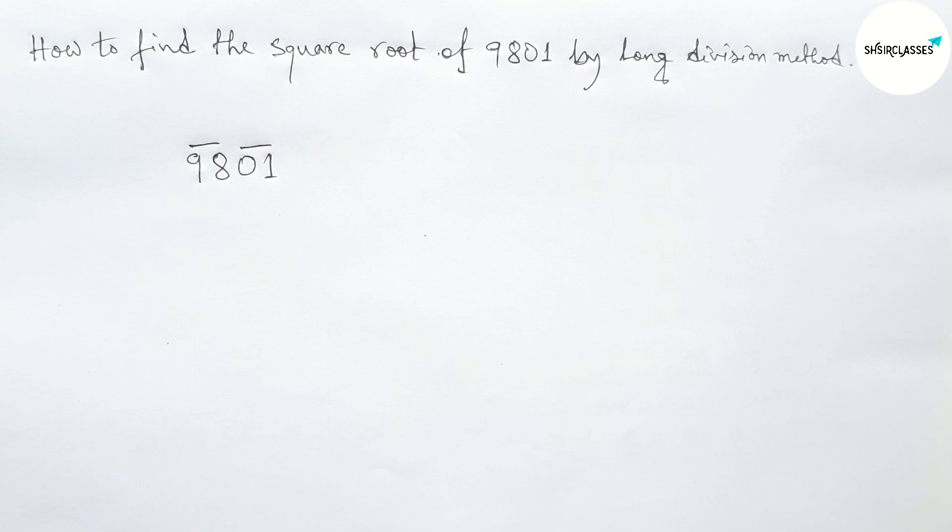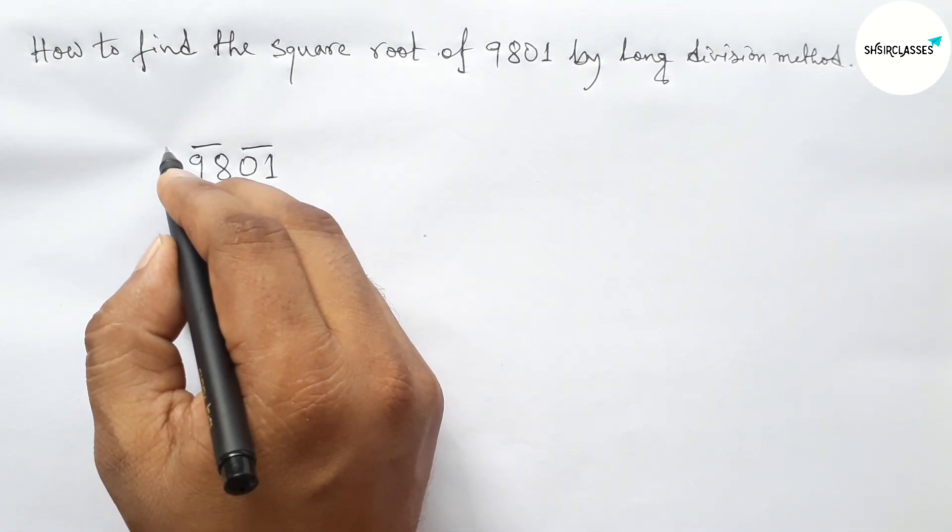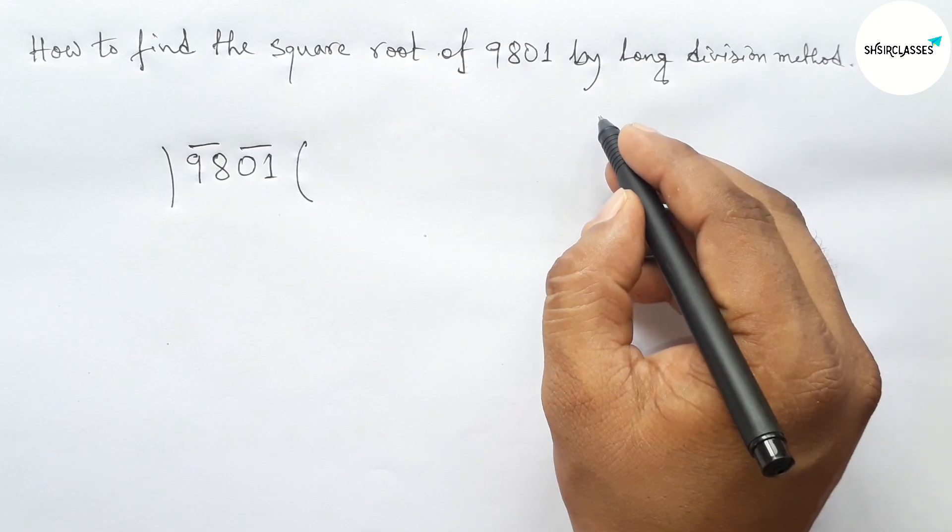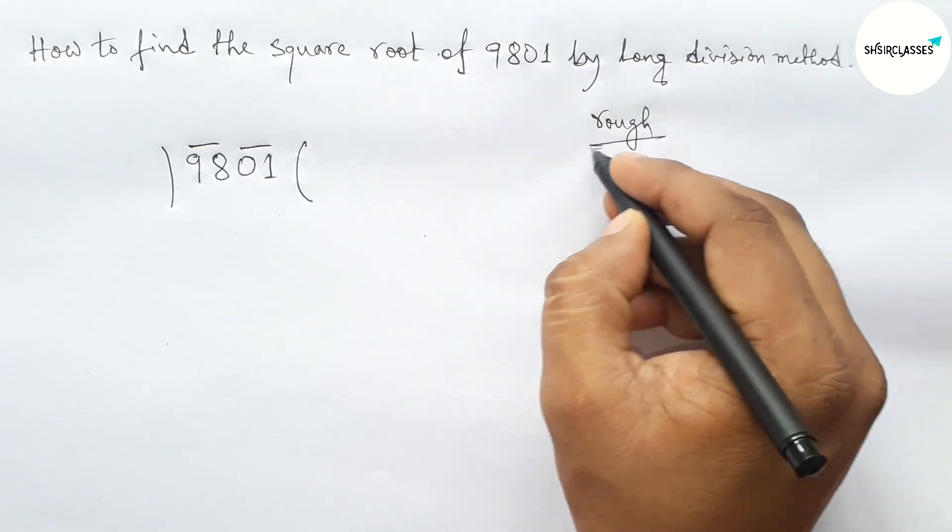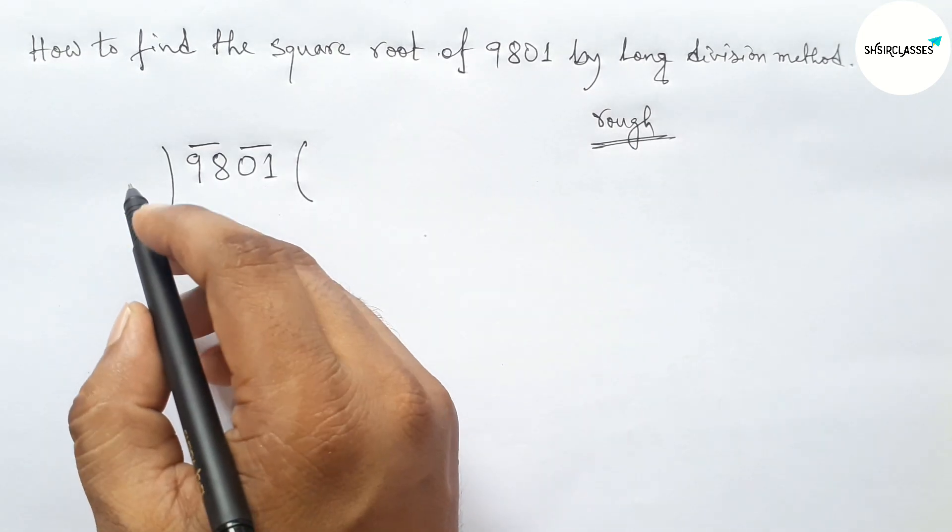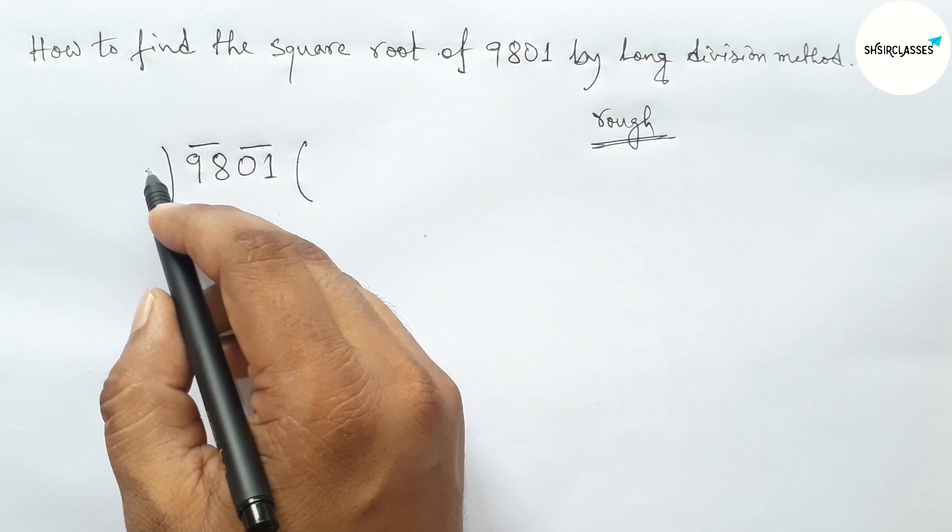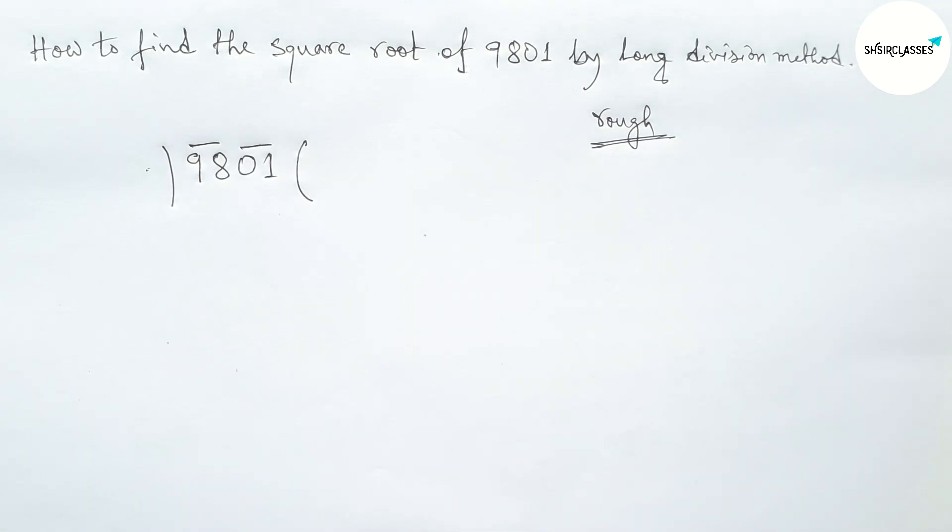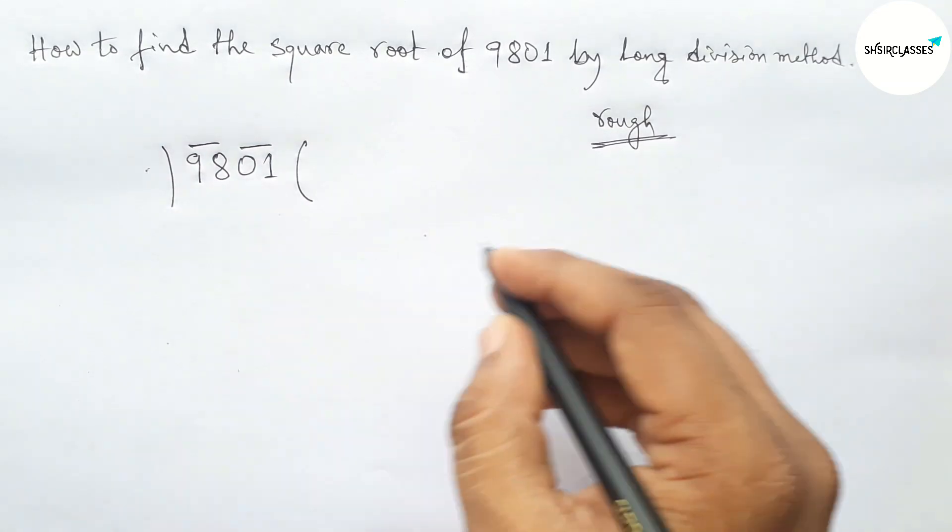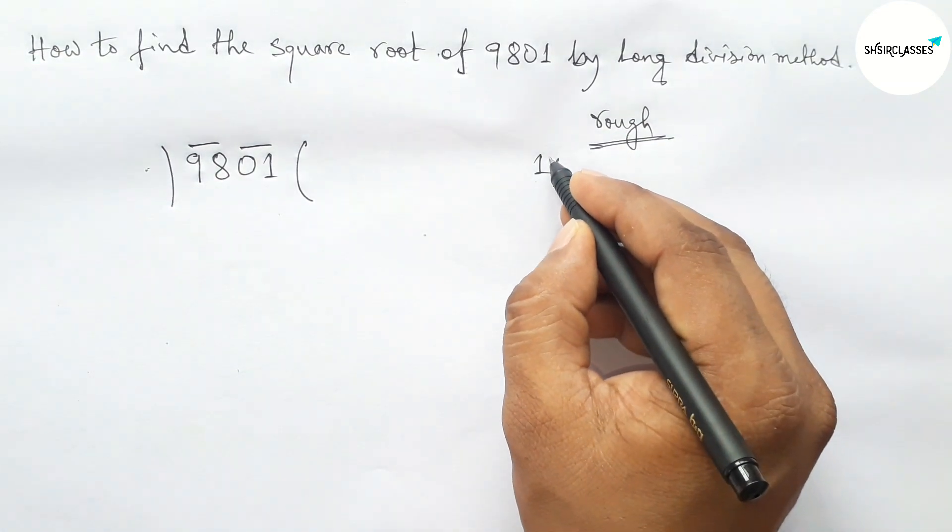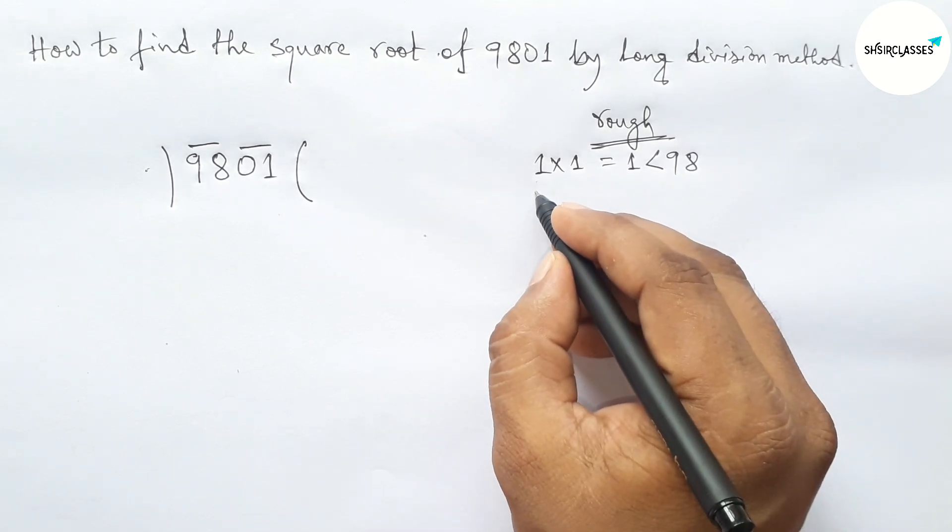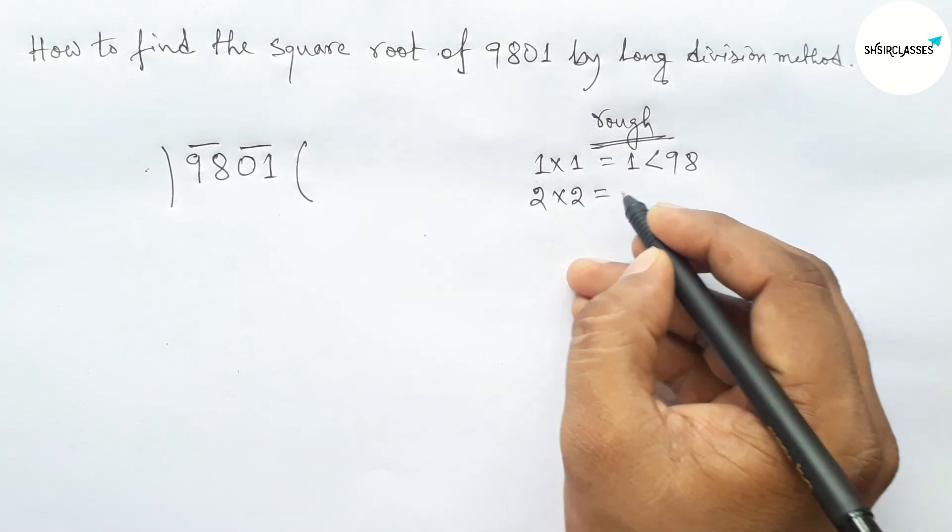Next, drawing division line on both sides. Okay, next roughly discussing here some important calculation. So first choose here a number and multiplying by that number which is less than or equal to 98. So first taking here 1 and multiplying by 1, which is less than 98. Now taking 2 and multiplying by 2, so 4, which is less than 98.